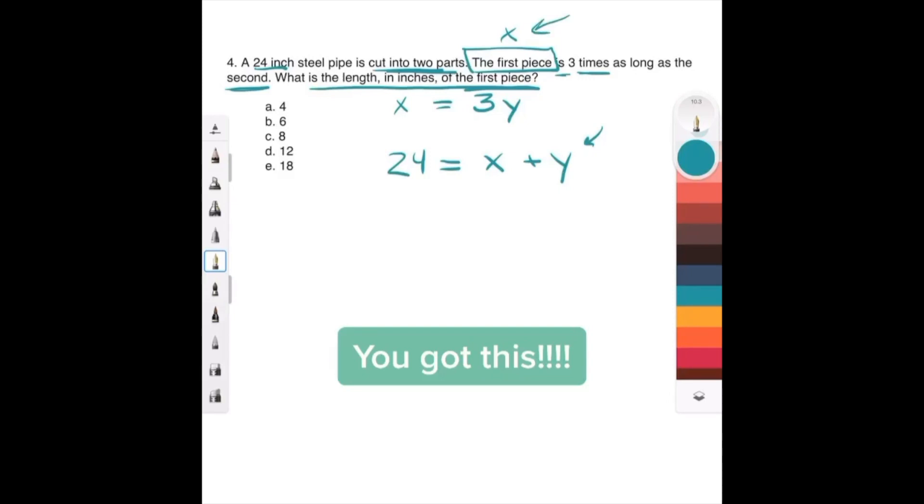Here's one easy way to do it. x is 3y, so we can replace x with 3y. So we get 24 equals 3y plus y. That's 24 equals 4y. Divide both sides by 4 and y equals 6. But remember we're not looking for y.